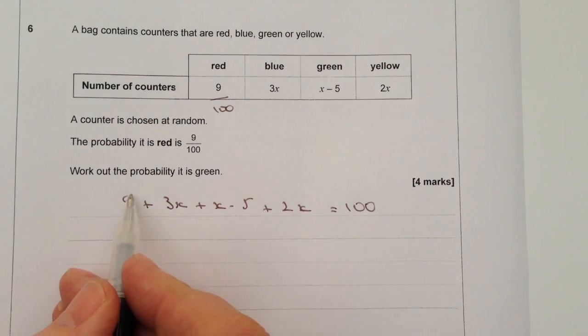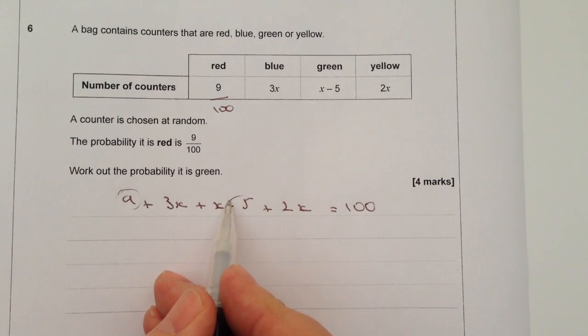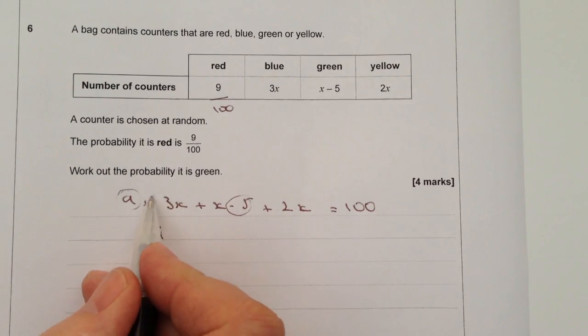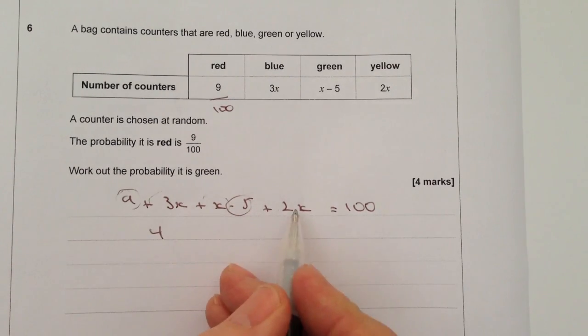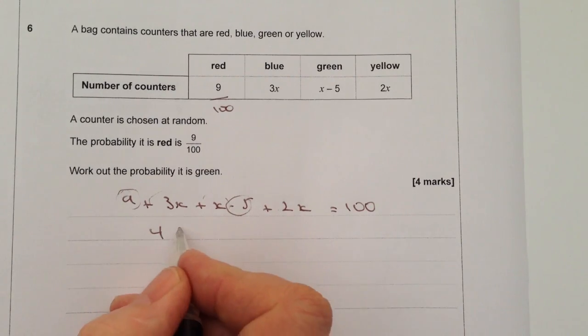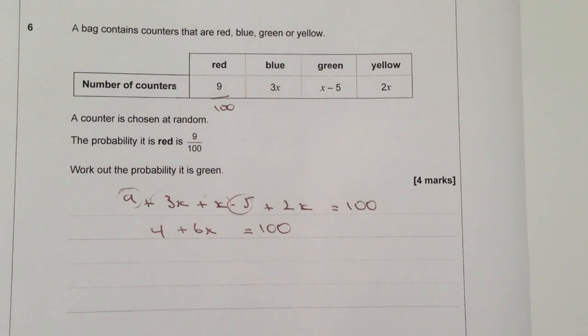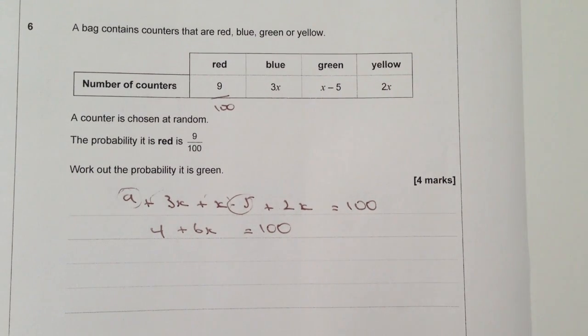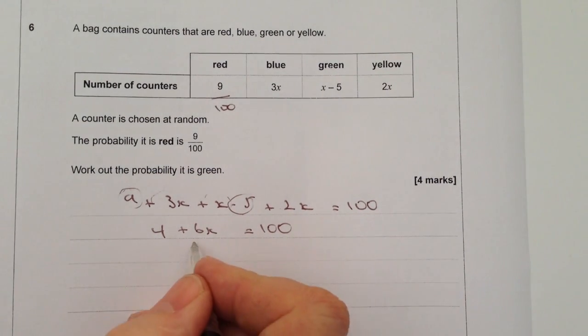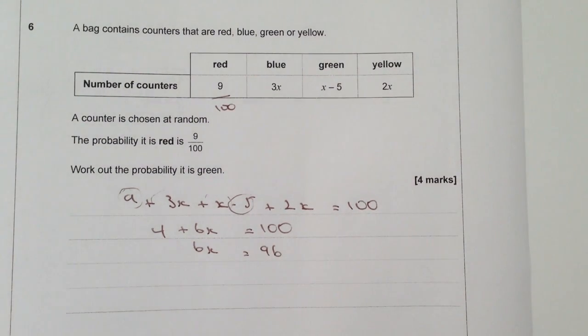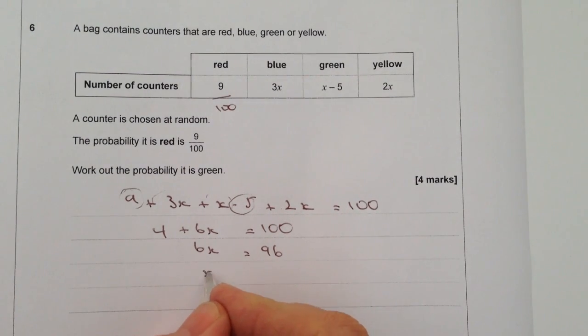So if I add this 9 to this negative 5 here, I'm going to get 4. And then I've got 3x plus x plus 2x, well that's going to be plus 6x, that equals 100. And then I'm going to take 4 away from both sides, so therefore 6x equals 96. And if I divide through by 6, it gives me a value of x which is equal to 16.